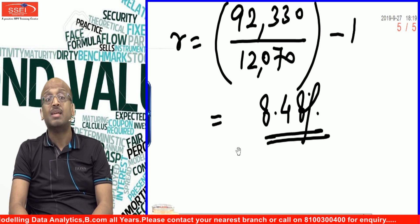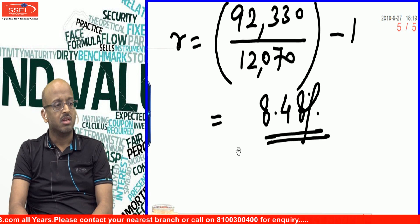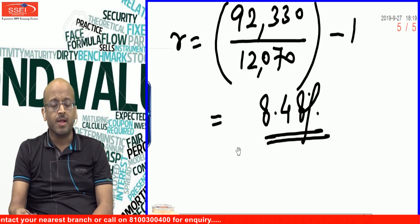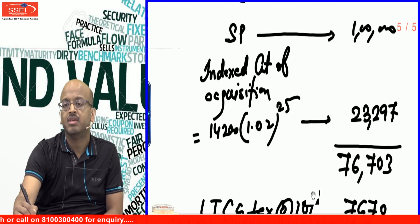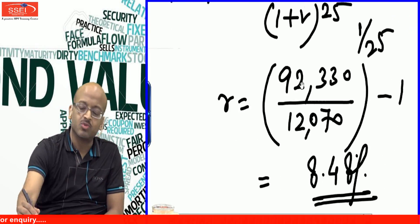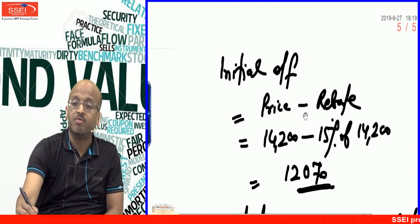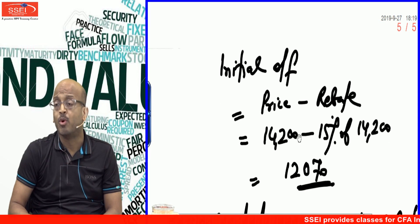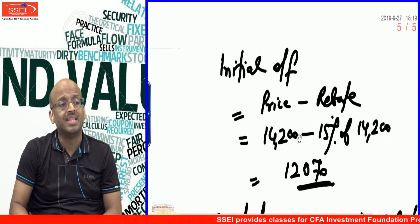You cannot touch anything except quality — only quality. Quality bonds, triple-A bonds — they are the ones that can be a saviour. So 8.48% is a very good return in this environment, post-tax. This was a strange sum. Both point number six and point number seven are extremely unlikely to come in the exam.